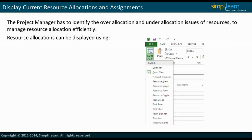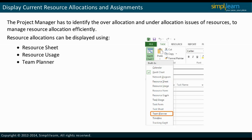Resource allocations can be displayed using the Resource Sheet, Resource Usage, and Team Planner views in Microsoft Project 2013. The quickest way to display these views is to select from the built-in Gantt chart list of the Task tab. We will cover each view in detail in the forthcoming slides. Let us begin with the Resource Sheet view in the next slide.